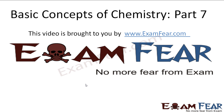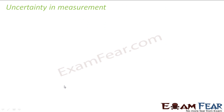Hello friends. This video on basic concepts of chemistry part 7 is brought to you by examfeu.com — no more fear from exams. Before watching this video, please make sure that you have watched parts 1 to 6. Now we will talk about a critical topic in chemistry called uncertainty in measurement, which is mostly used in the lab when you are doing experiments. Chemistry is all about experiments, so this is a critical topic.